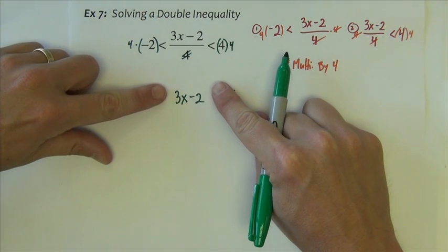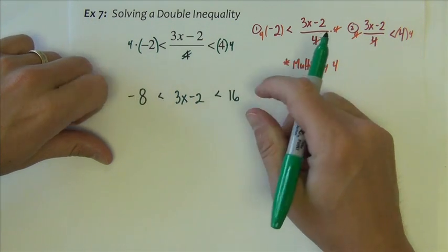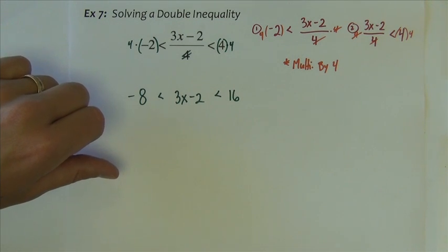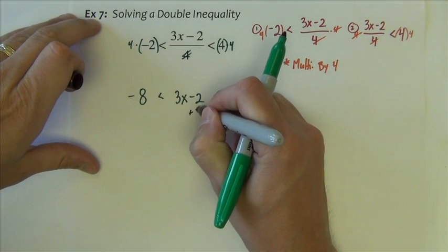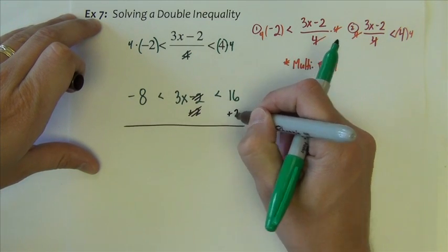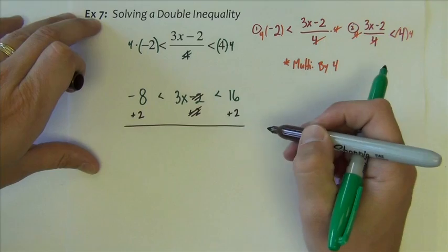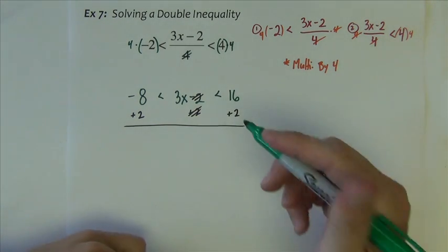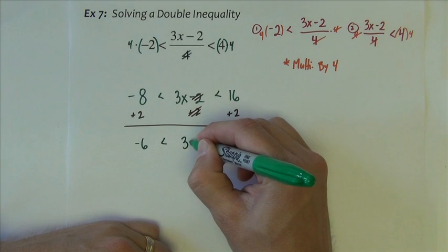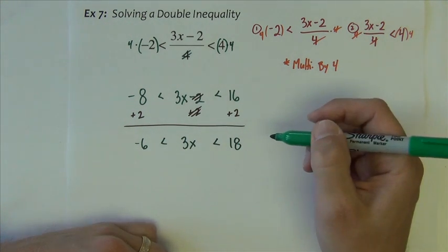So now we have 3x minus 2. What I would do next is add 2 to both sides. So if I add 2, it cancels out here. I also have to add 2 over here, and I also have to add 2 to this side as well. So we get negative 6 less than 3x less than 18.